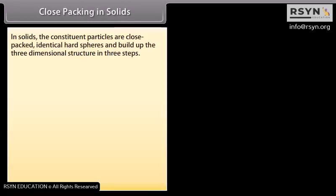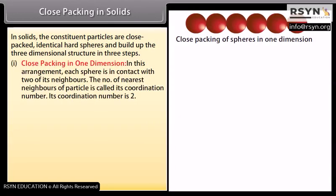In solids, the constituent particles are close packed as identical hard spheres and build up the three dimensional structure in three steps. Step 1: Close packing in one dimension. In this arrangement, each sphere is in contact with two of its neighbours. The number of nearest neighbours of a particle is called its coordination number. Its coordination number is 2.